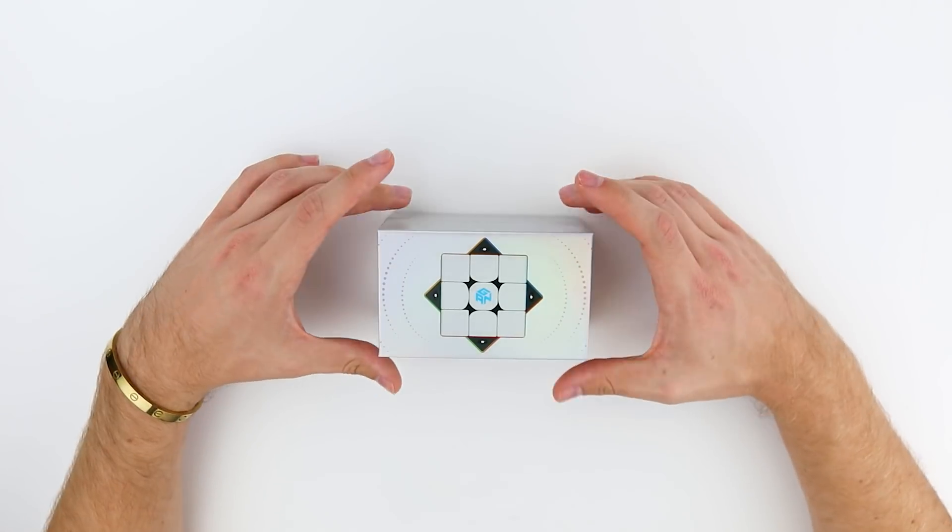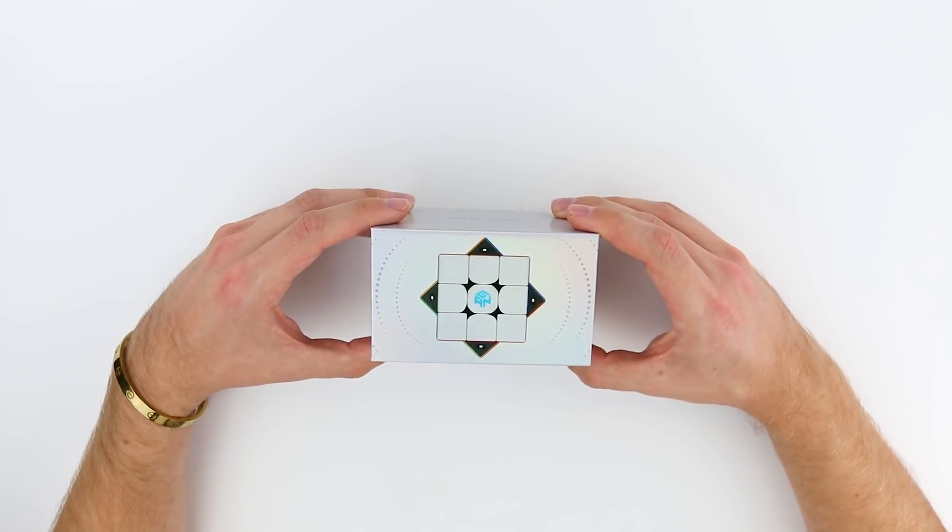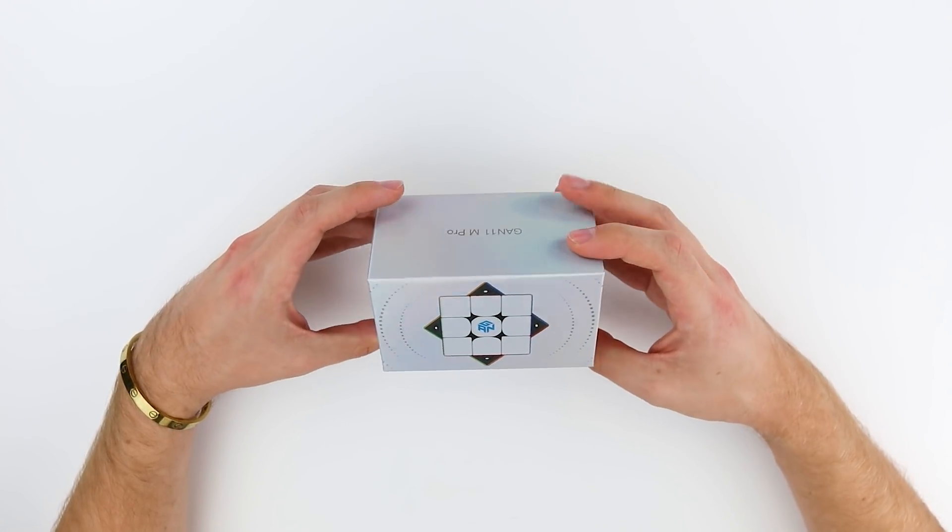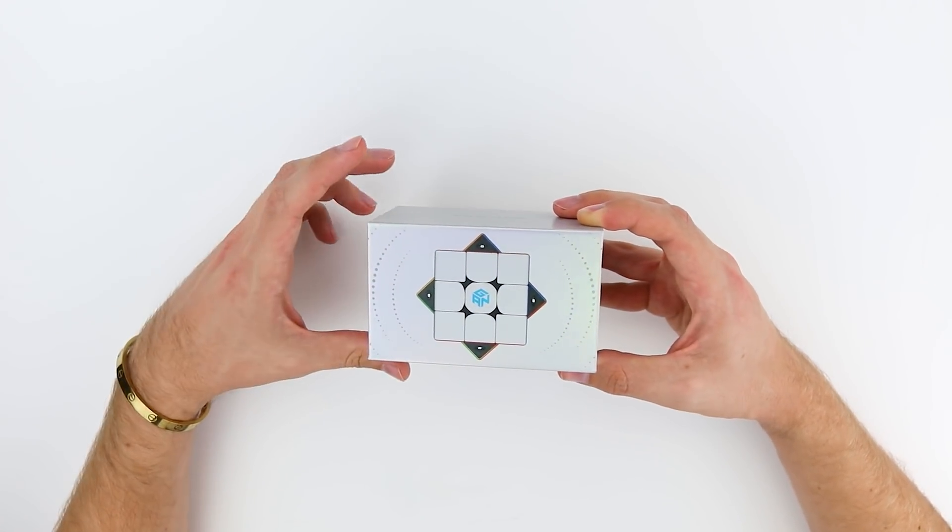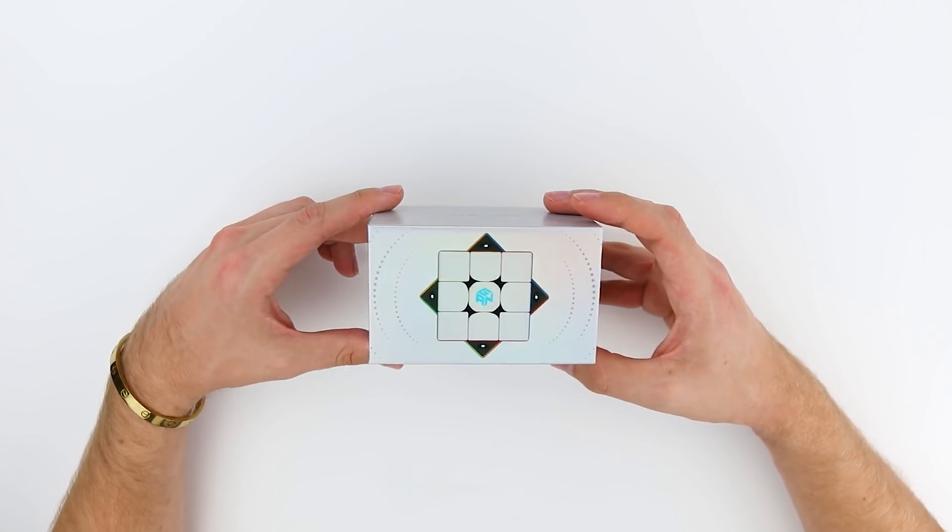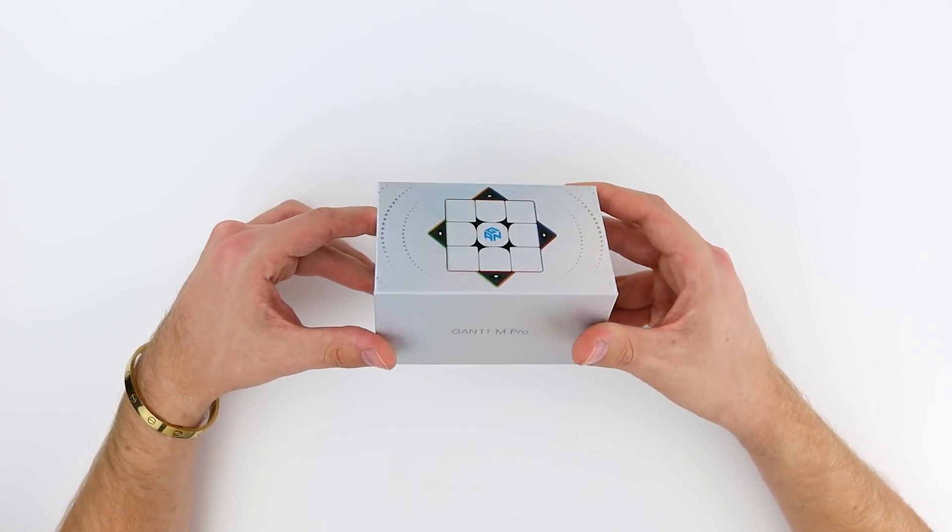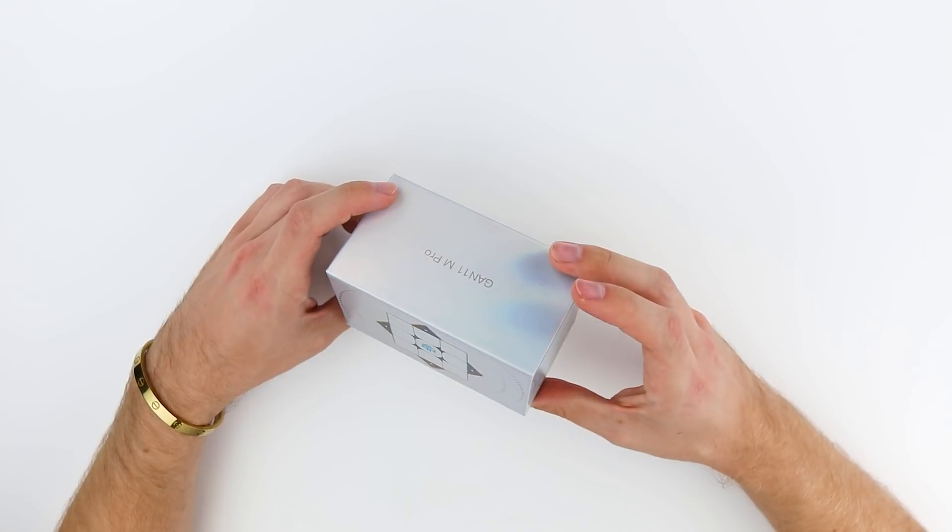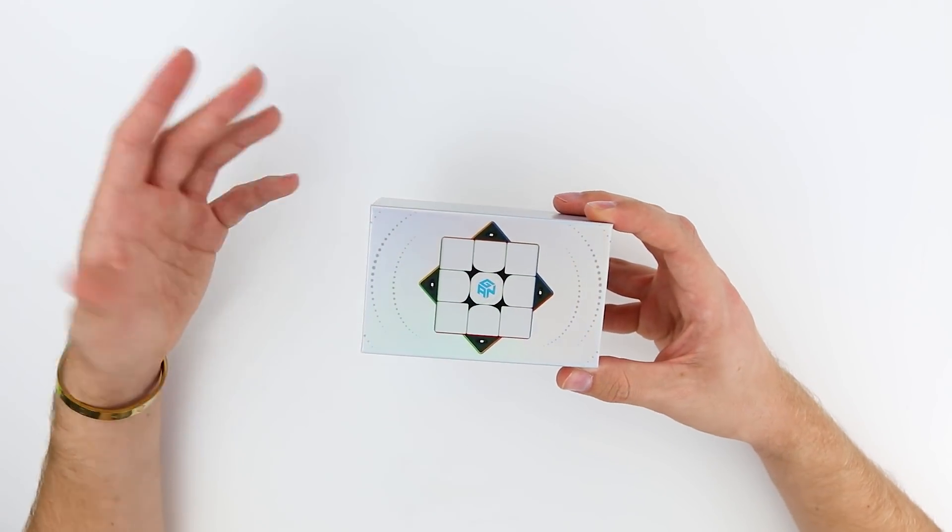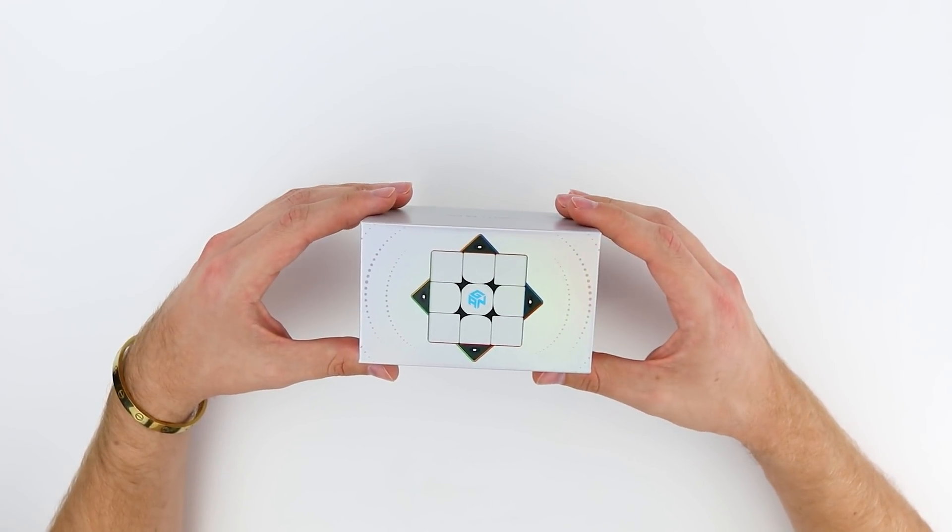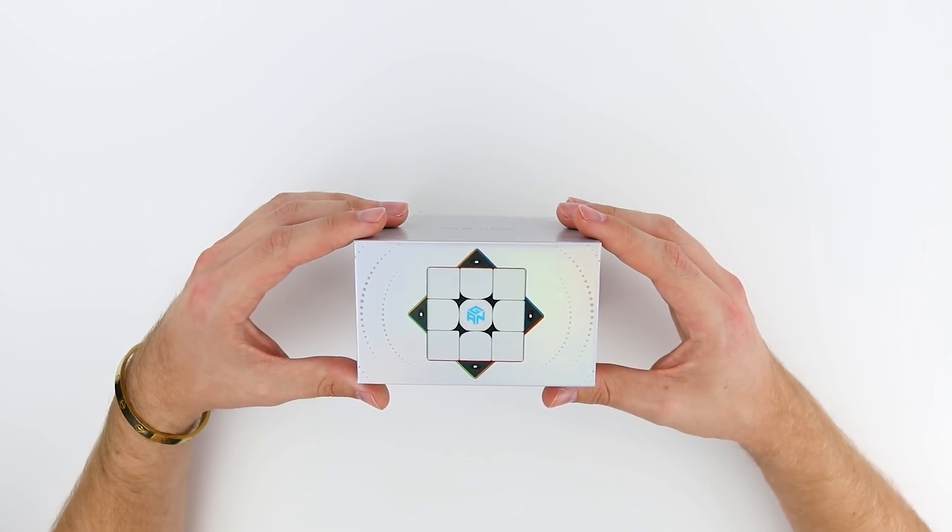I've been very highly anticipating the release of this cube for months and the first impression I have is the box is pretty cool. It's a lot smaller than that of the XS and has this really cool holographic finish. It's very minimalistic which is kind of GAN's brand.